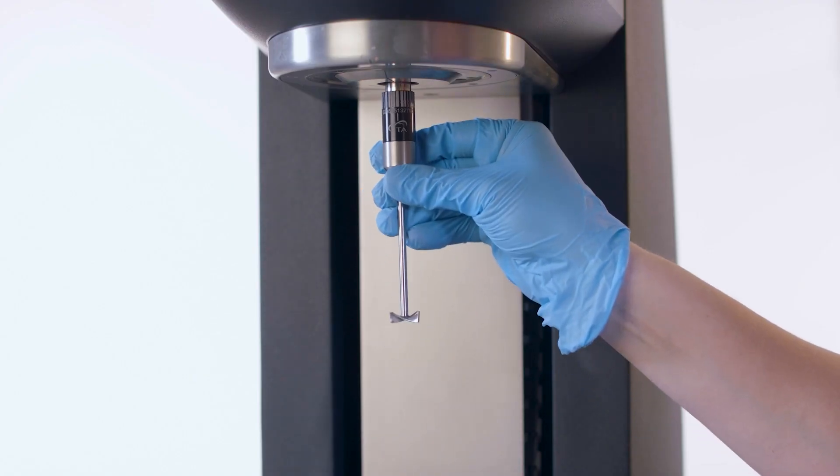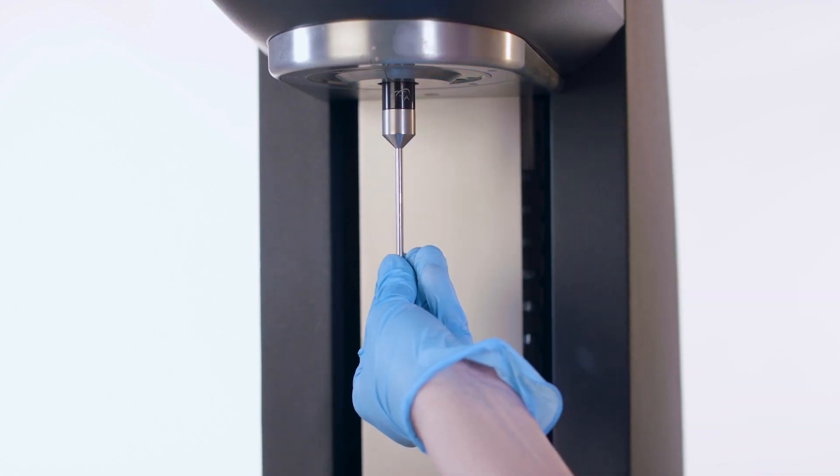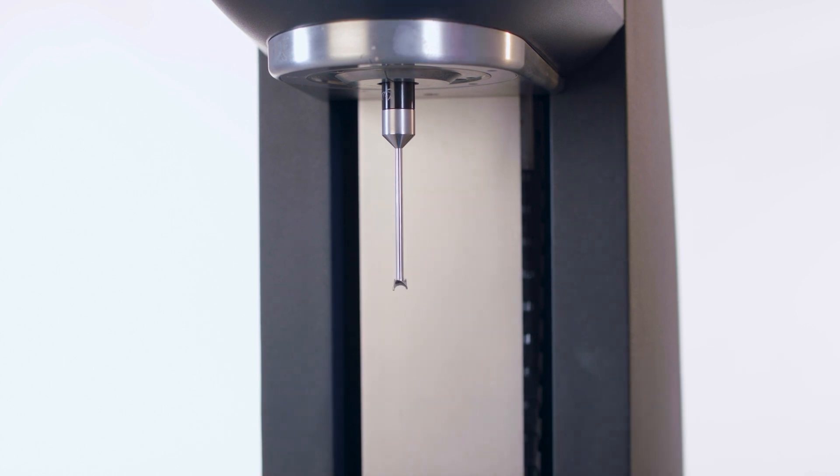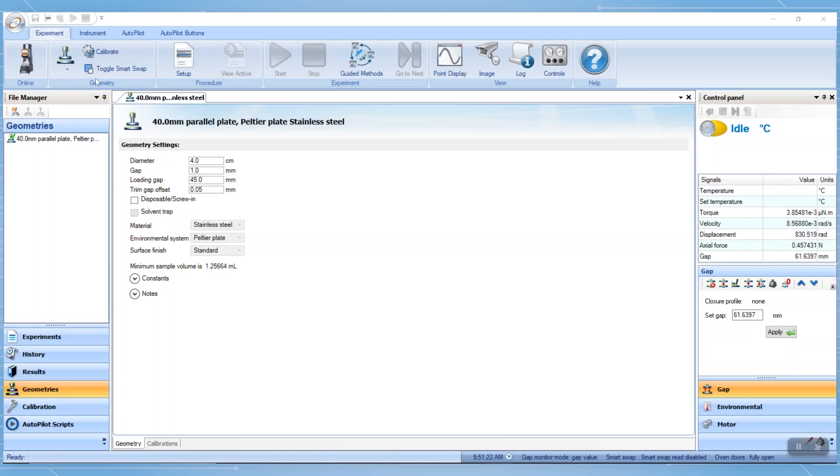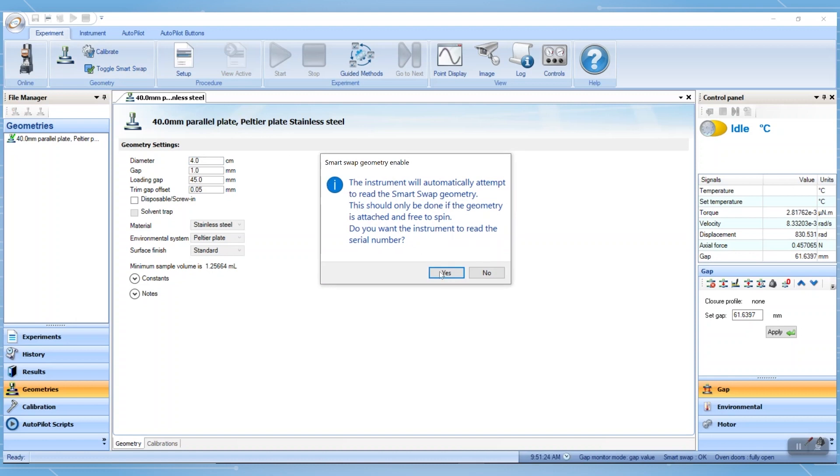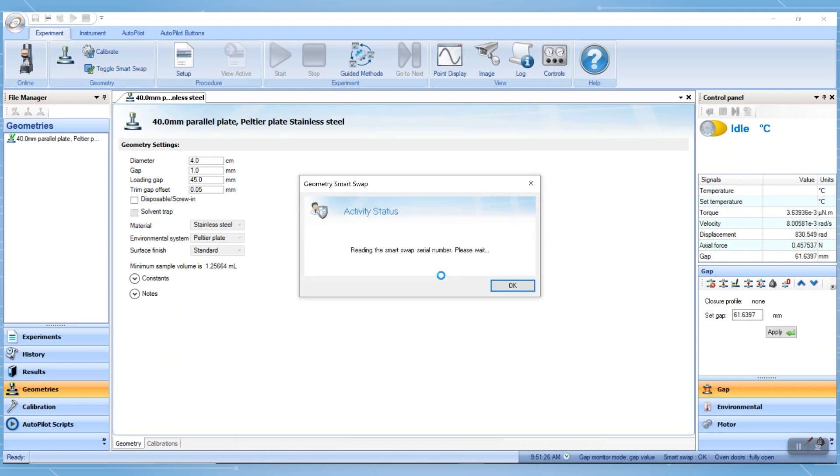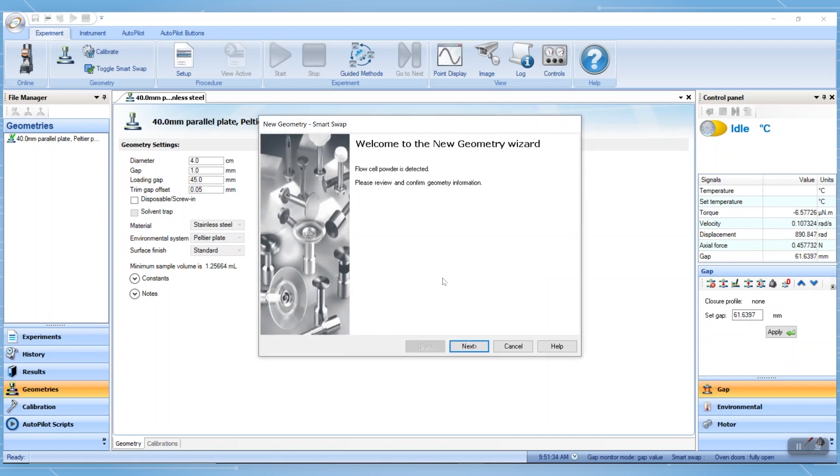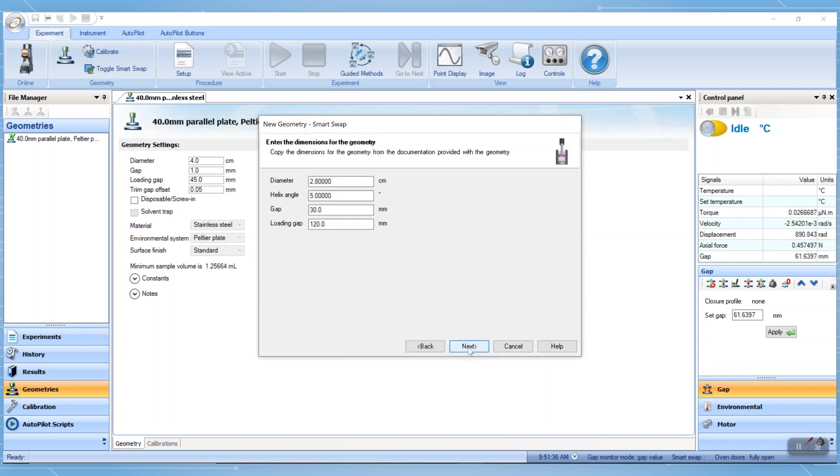The geometry is loaded by pushing it up the spindle and screwing the draw rod finger tight. With smart swap enabled and showing a green check mark, the geometry label is red and the new geometry wizard starts automatically. Review the parameters and click next and finally click finish.